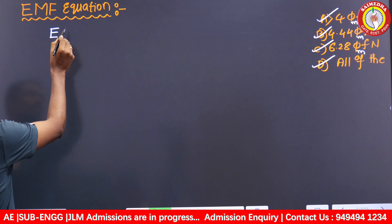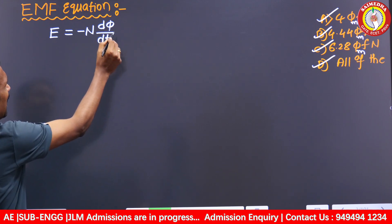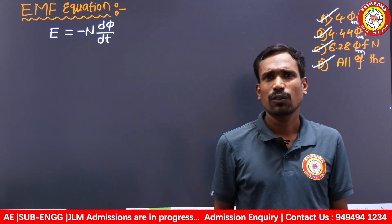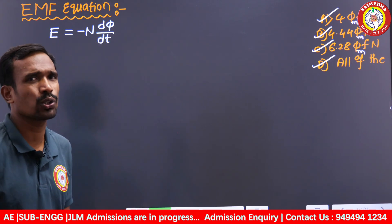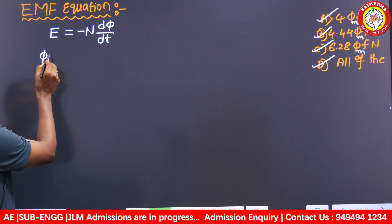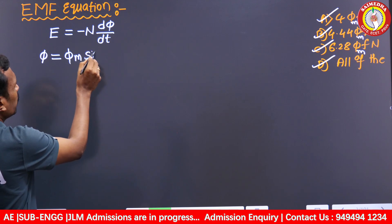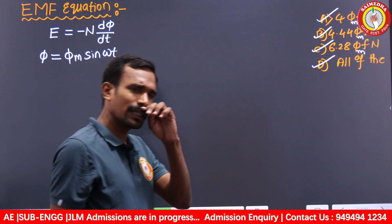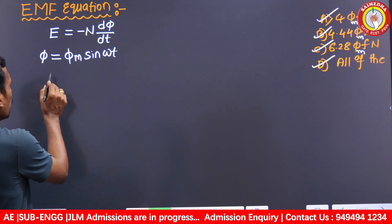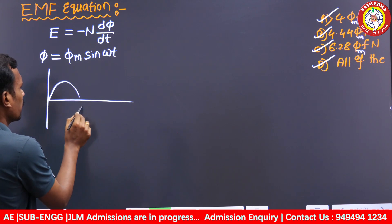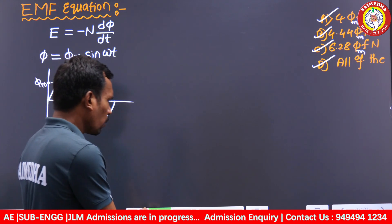The transformer EMF is a statically induced EMF: E = −N × dΦ/dt. This is the EMF equation given by Faraday's second law combined with Lenz's law — covering both magnitude and direction. The flux given to the transformer is Φ = Φ_M × sin(ωt), which is the flux waveform, where Φ_M is the amplitude of the flux.